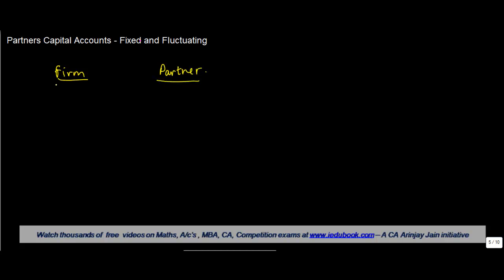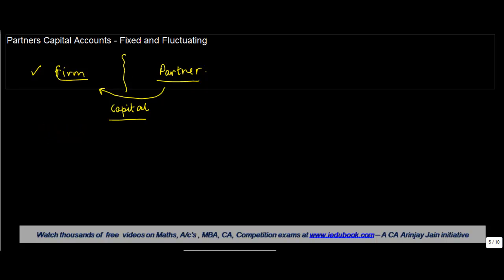Let us understand something about partners capital account. First, the concept: there is a firm and there is a partner. We are currently discussing about the accounting by the firm — these are treated as two different individual entities. A partner may contribute capital to the firm, which is his money. And then there are certain transactions which happen between the firm and the partner.